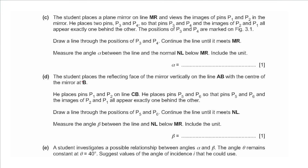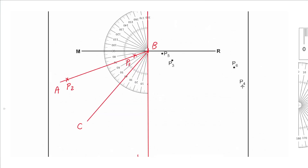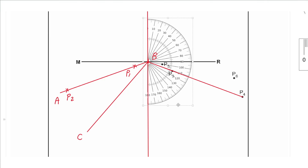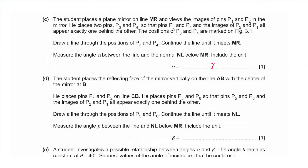Part c: the student places a plane mirror on MR, views images of P1 and P2, and places pins P3 and P4 so all four appear in line. We draw a line through P3 and P4, continuing it to meet MR. Measuring the angle alpha between this line and the normal NL below MR gives approximately 70°.